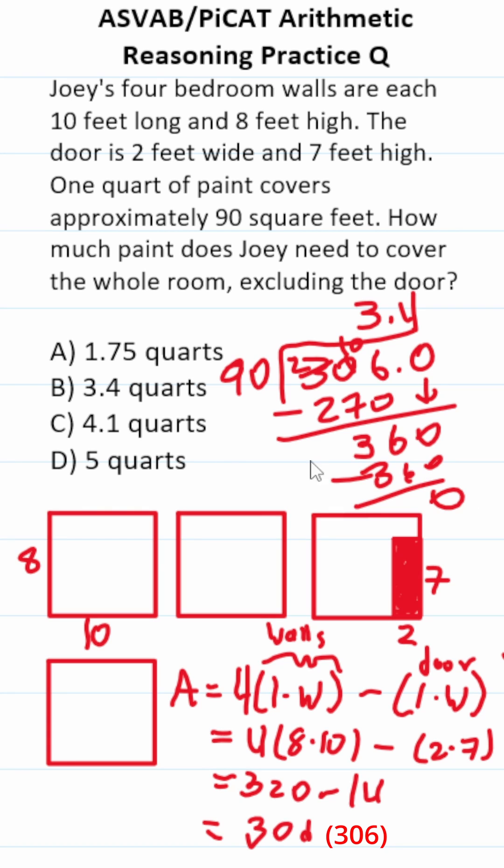That's going to be 360 with no remainder. So he's going to need B, 3.4 quarts of paint to paint these walls.